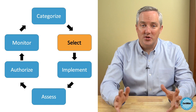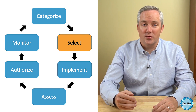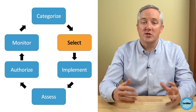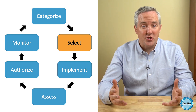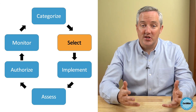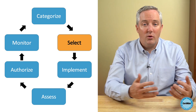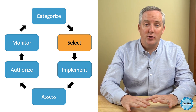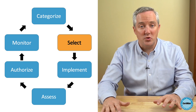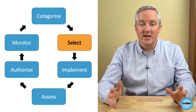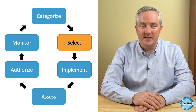Then we move on to step two, where the organization selects the security controls that should be used to manage the risks to the information system. This selection is based upon the system's categorization from step one. We're going to likely begin with a standard baseline of controls, and then add or subtract specific controls to tailor the specification to the system's needs.